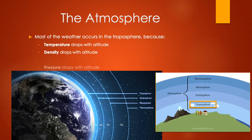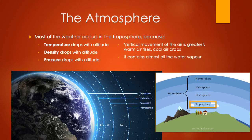The troposphere is that lower region closest to the ground. Most of the weather occurs within this region because of a couple of factors. Firstly, temperature drops with altitude — so as altitude increases, temperature will drop. Density drops, so the amount of air molecules per parcel of air will decrease with an altitude increase. Pressure will also drop with altitude. Within the troposphere, the vertical movement of the air is the greatest — warm air will rise and cool air will sink. This region also contains almost all of the water vapor, which is why it creates weather.